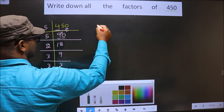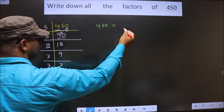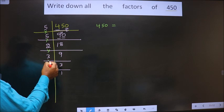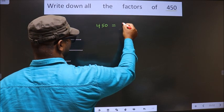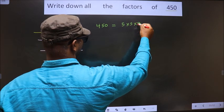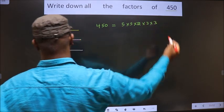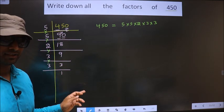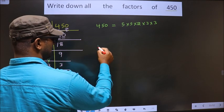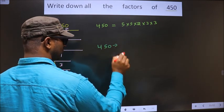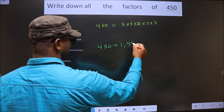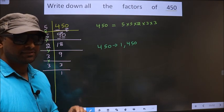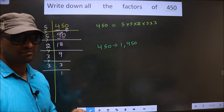Now 450 is equal to the product of these numbers: 5 × 5 × 2 × 3 × 3 × 3. Any number you take will definitely include 1 and the number itself in its factors.